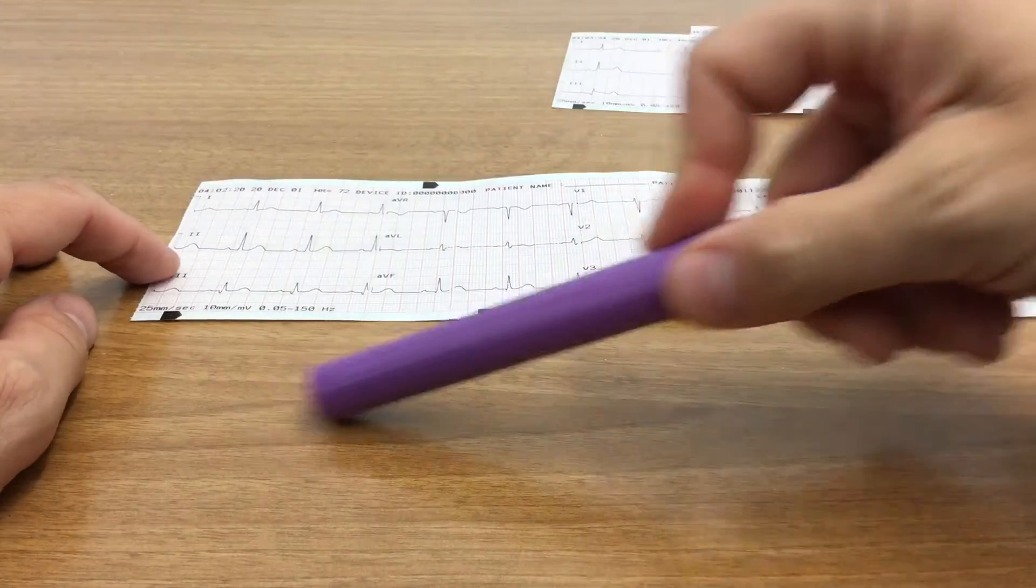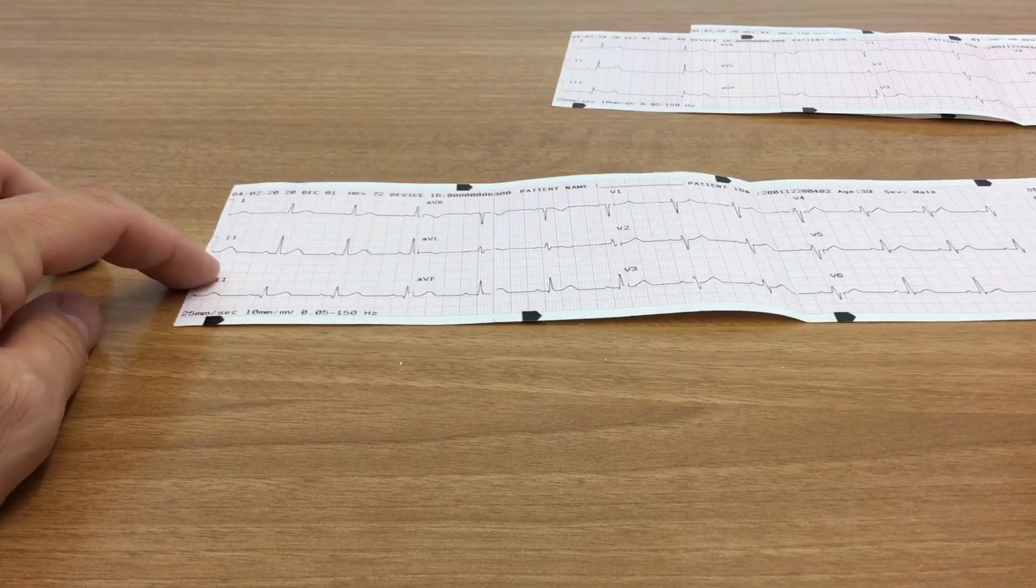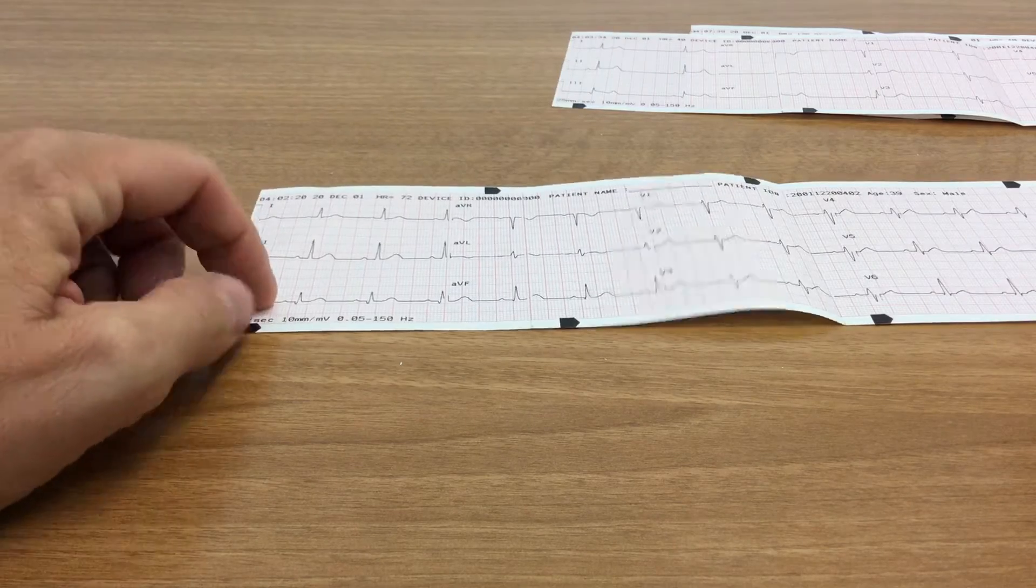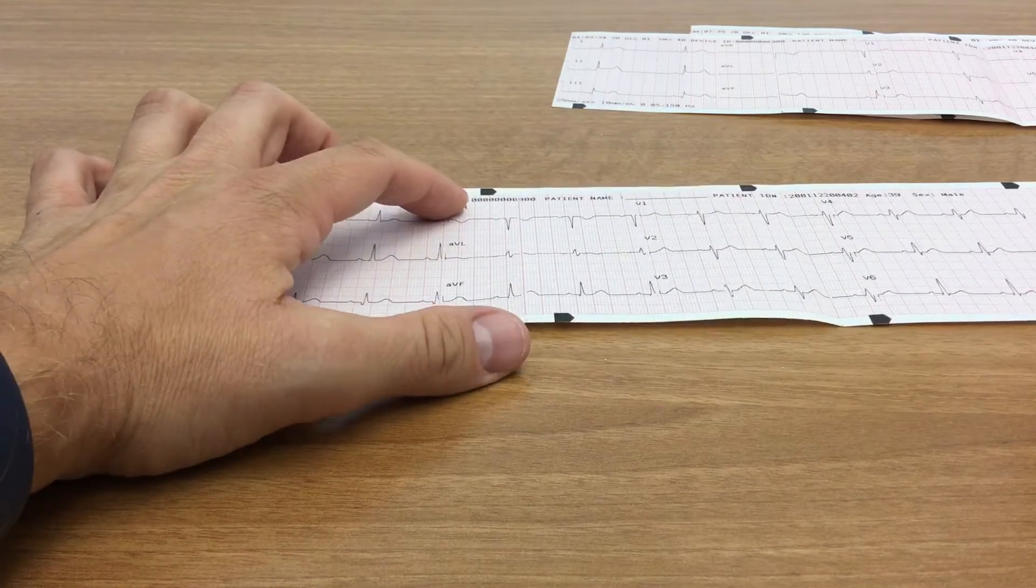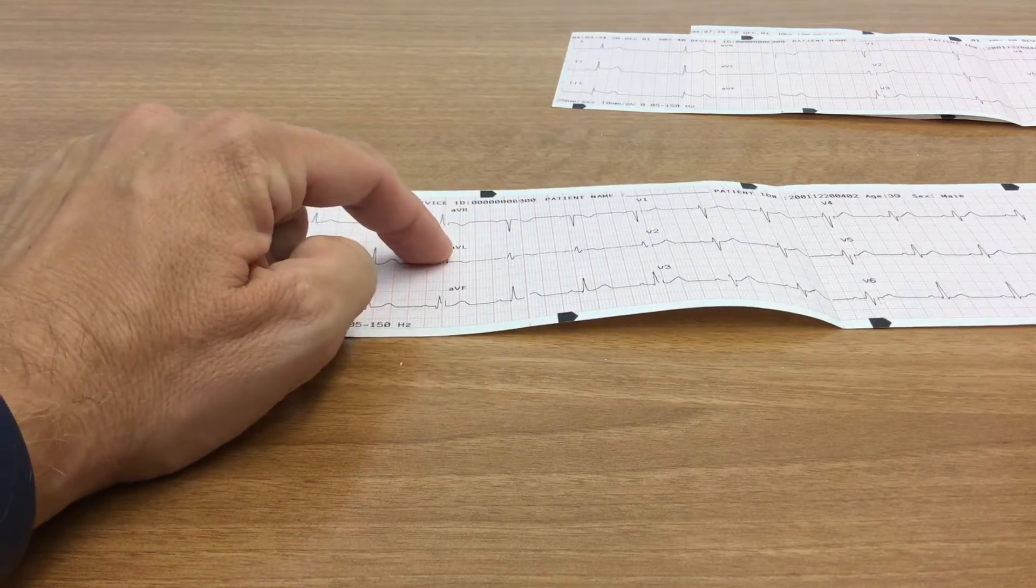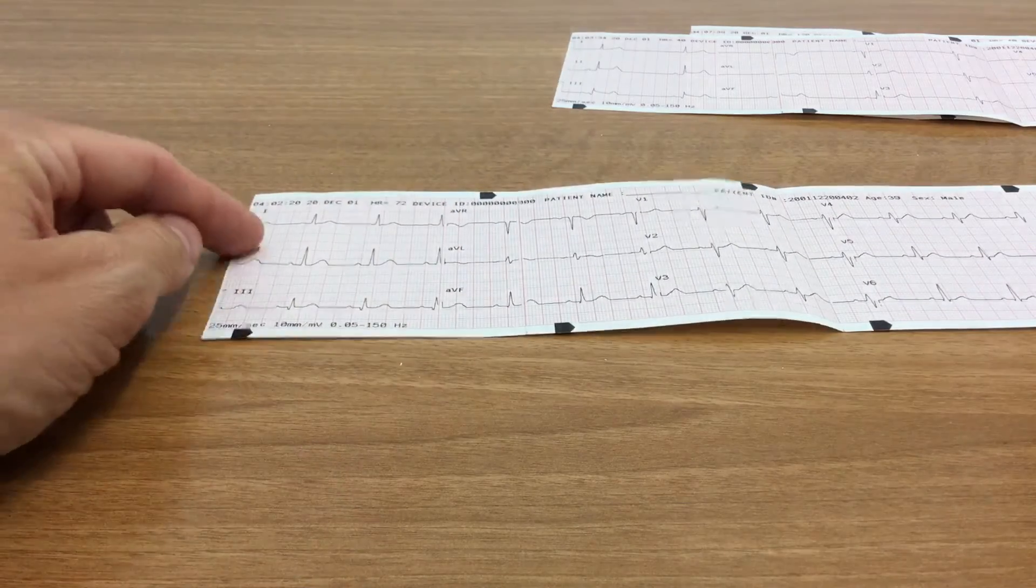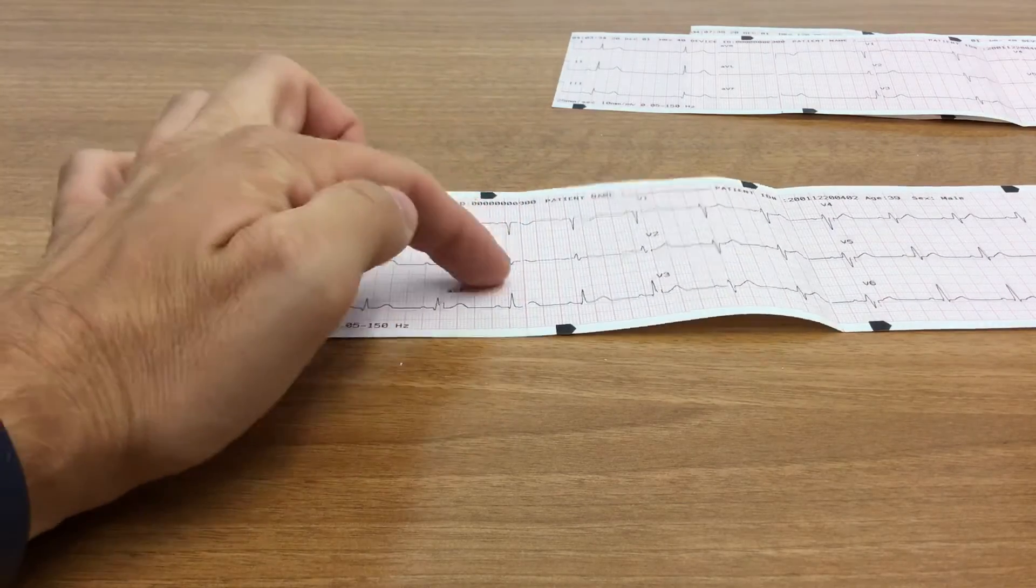Some have a rhythm strip associated with them, but these are your standard lead configurations. So you have lead one, two, three, augmented vector right, augmented vector left, and augmented vector front. So AVR, AVL, AVF, right? So one, two, three, AVR, AVL, AVF.